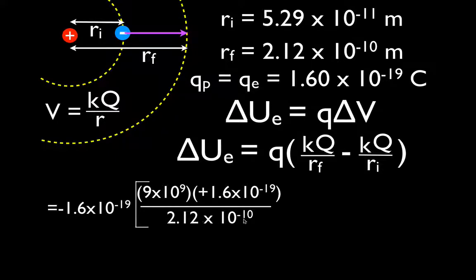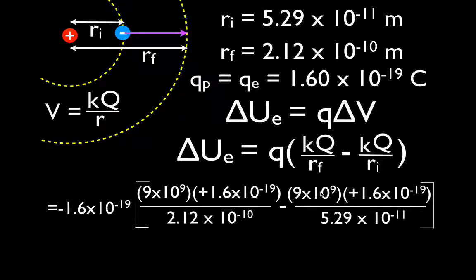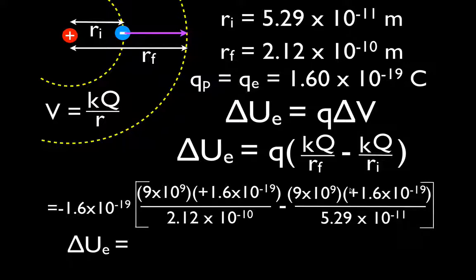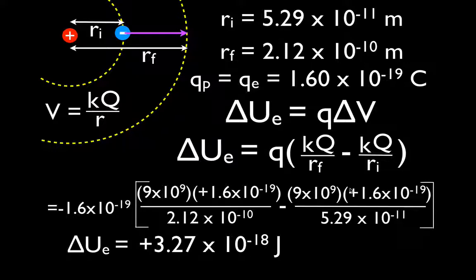We multiply those together and divide by the distance between them in meters. Then we subtract the initial potential: 9 times 10 to the 9 newton·meter squared per Coulomb squared, times the charge, divided by the initial distance. This is the final potential; this is the initial potential. We do all that math and we come up with a change in potential energy of positive 3.27 times 10 to the minus 18 joules.